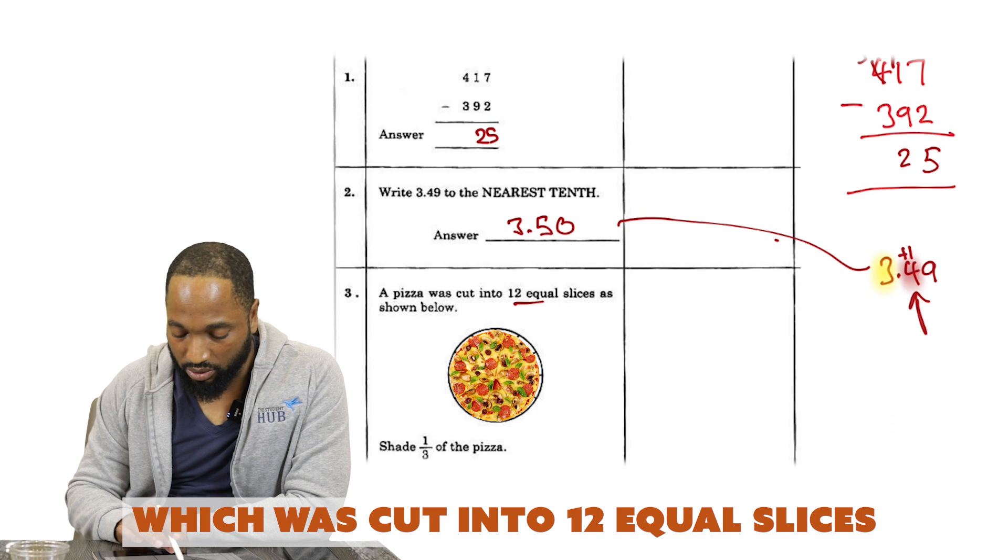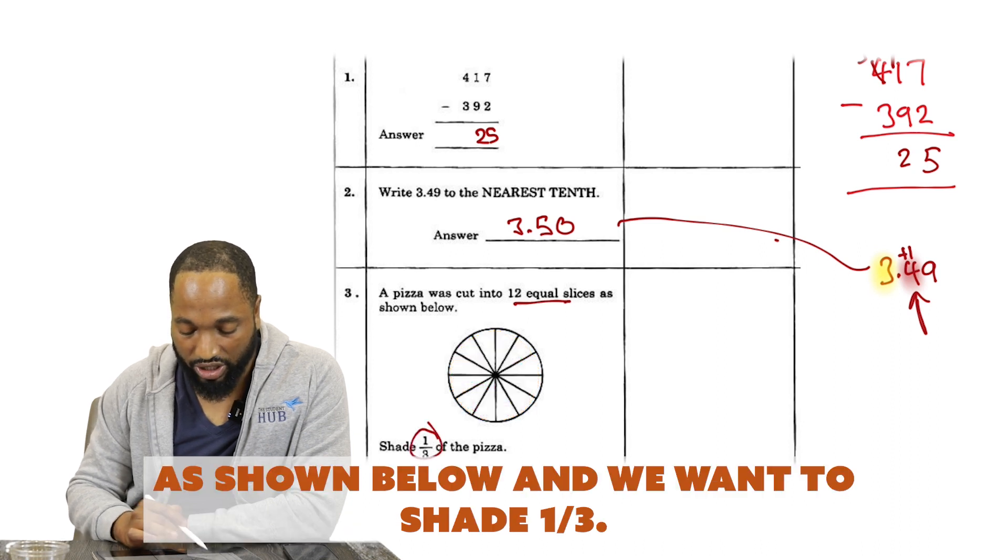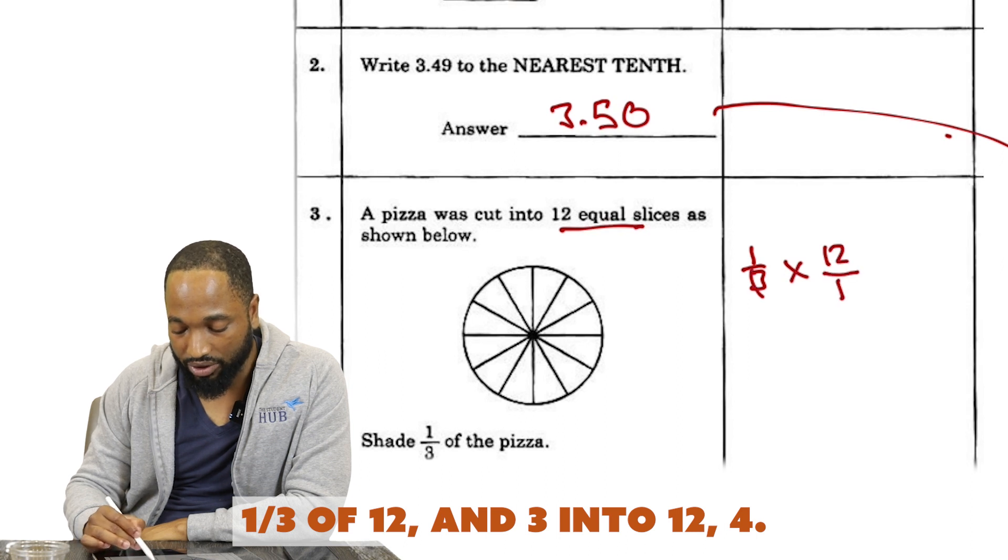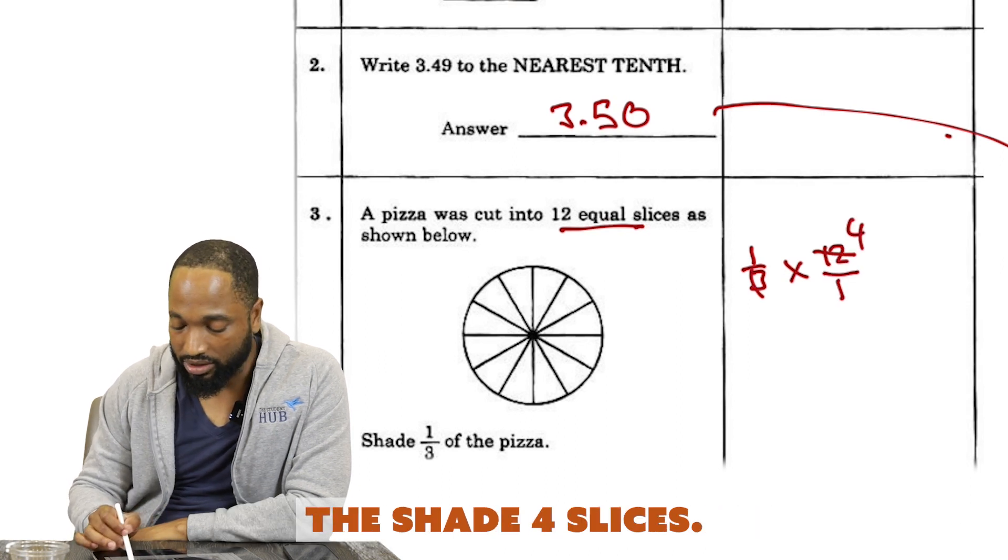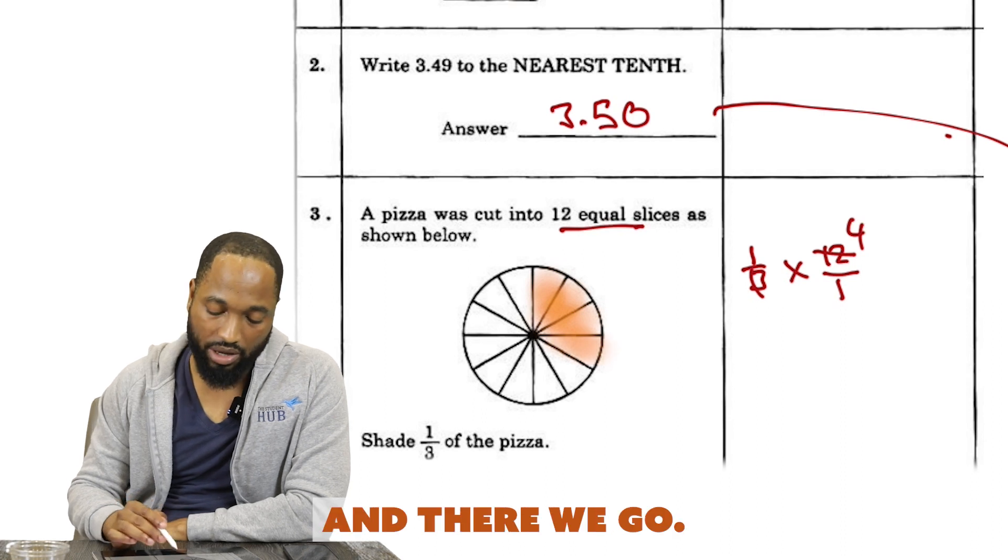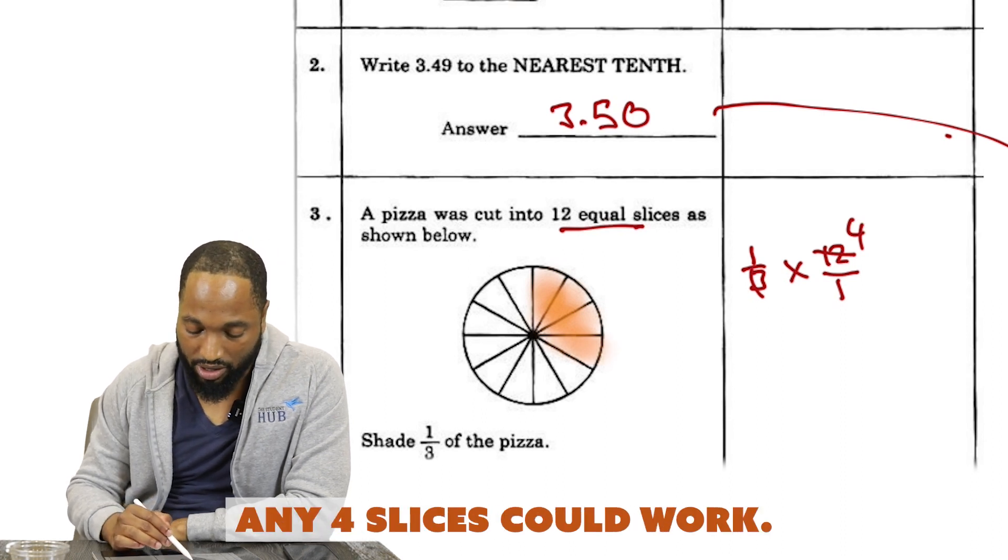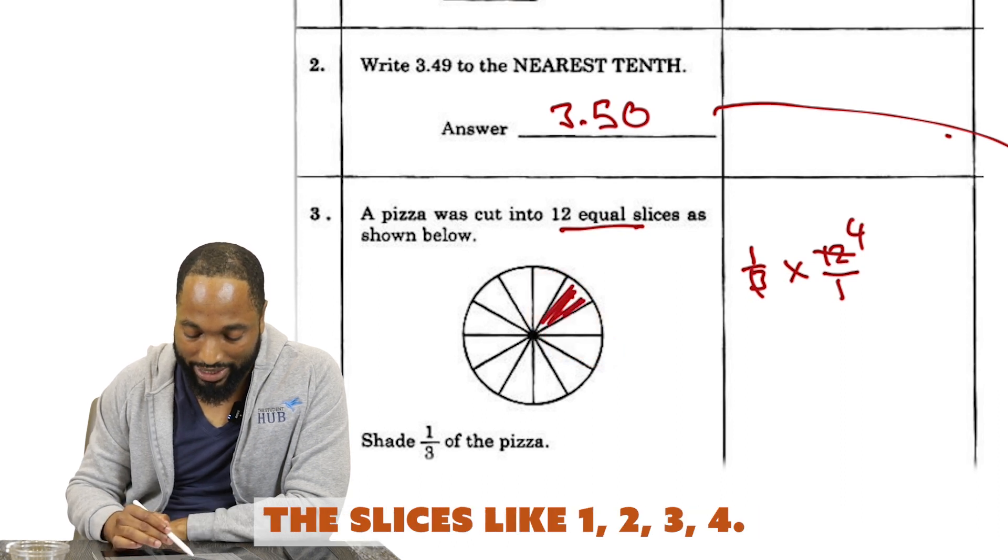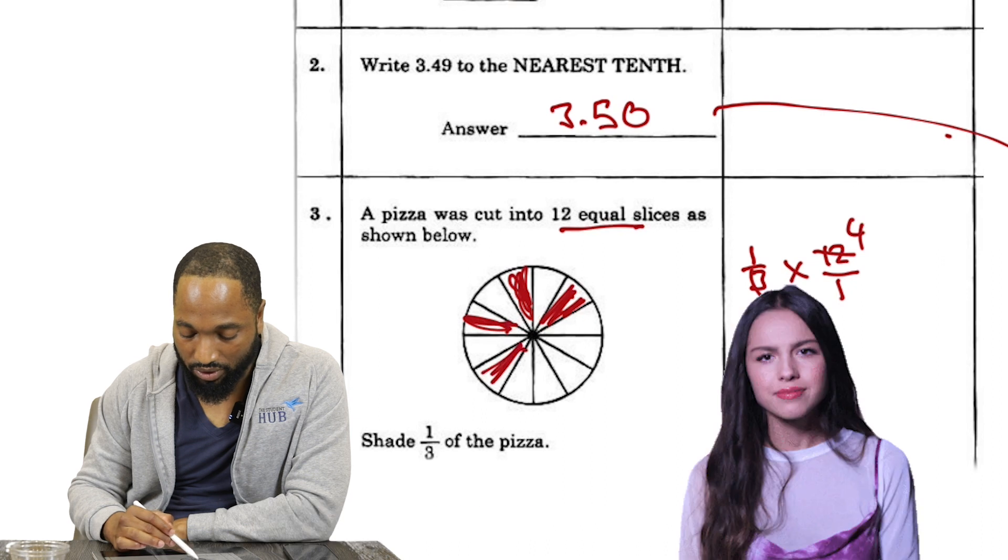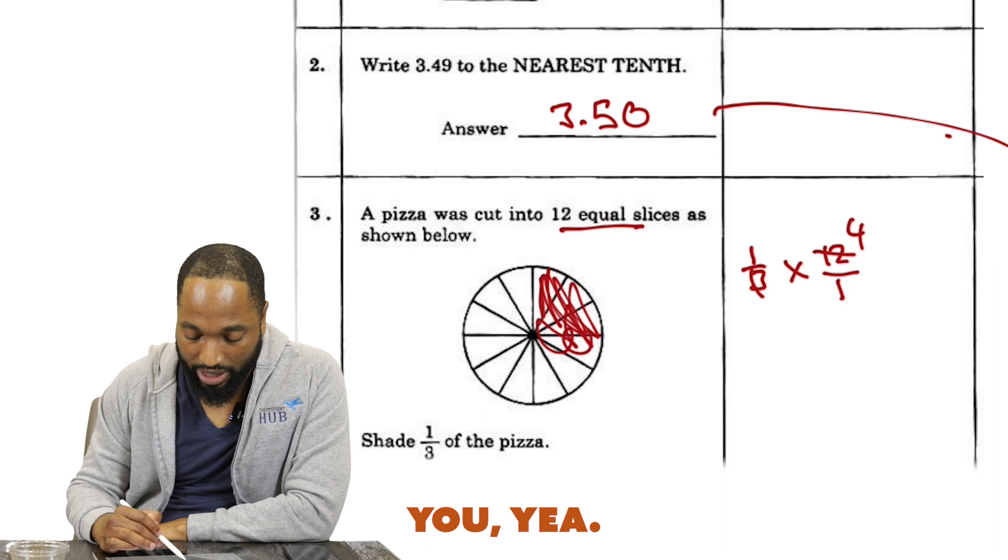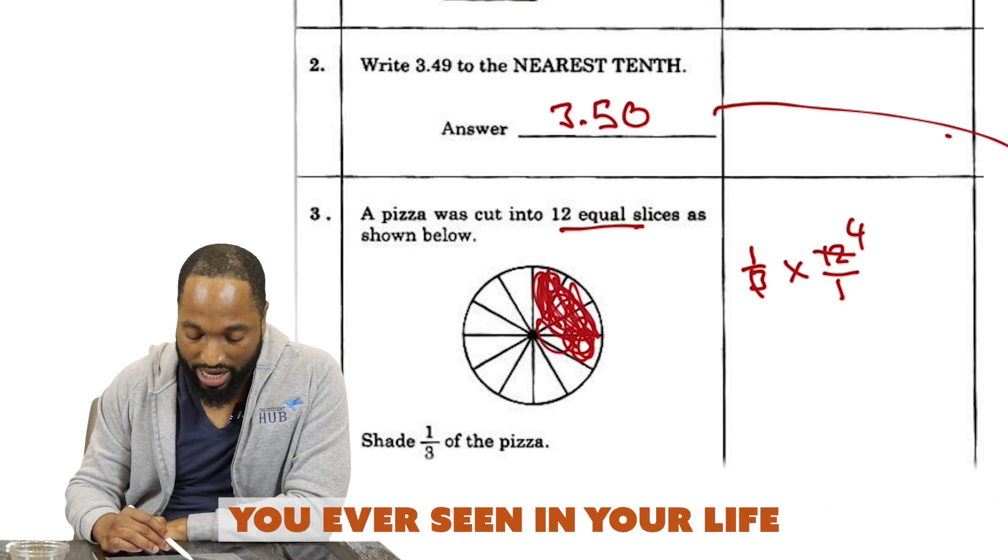Here we have a pizza which was cut into 12 equal slices as shown below, and we want to shade one third. So we're really asked one third of 12, and three into twelve is four. We are being asked to shade four slices—one, two, three, four. There we go. Any four slices could work. Some adventurous people have been known to shade slices like one, two, three, four, not next to each other.